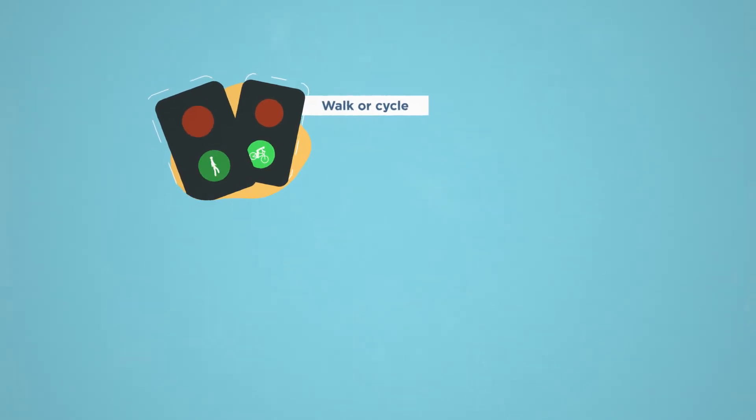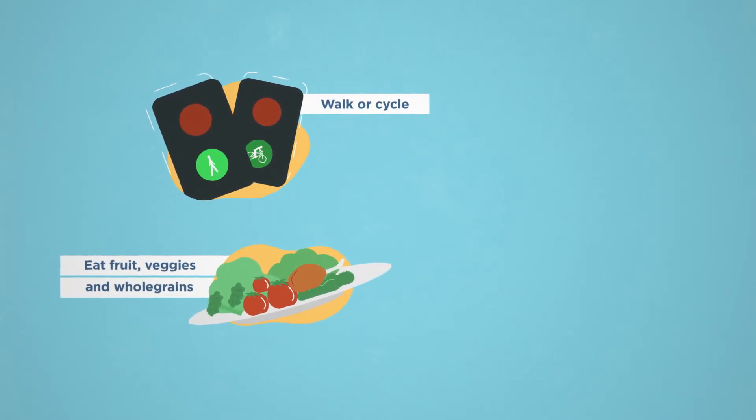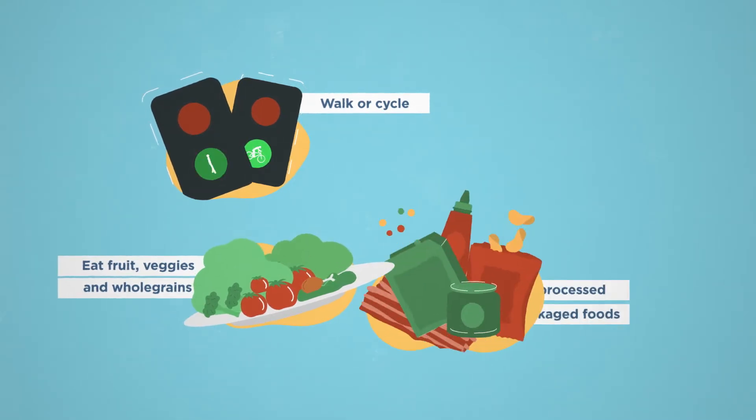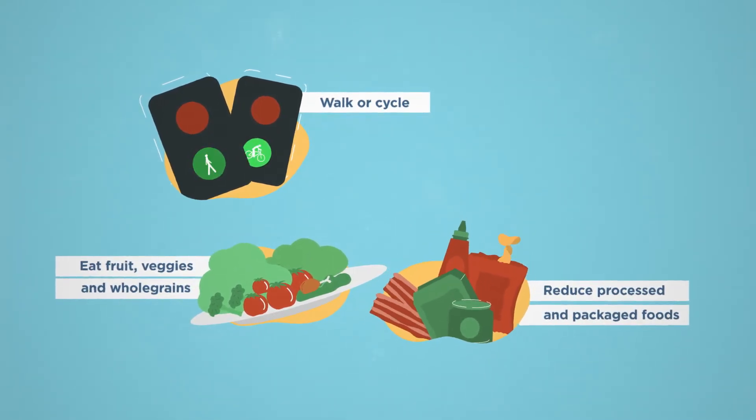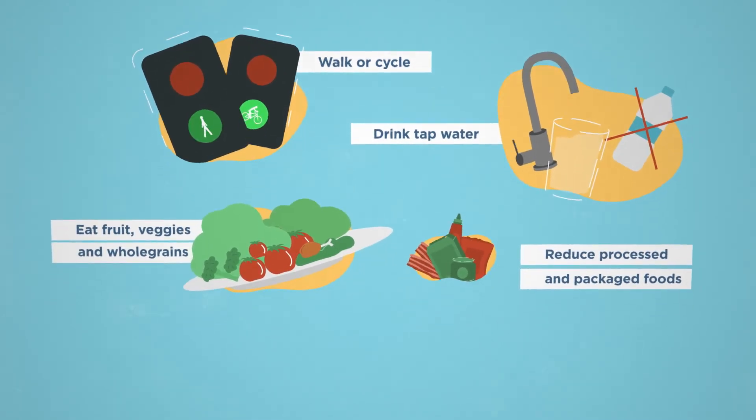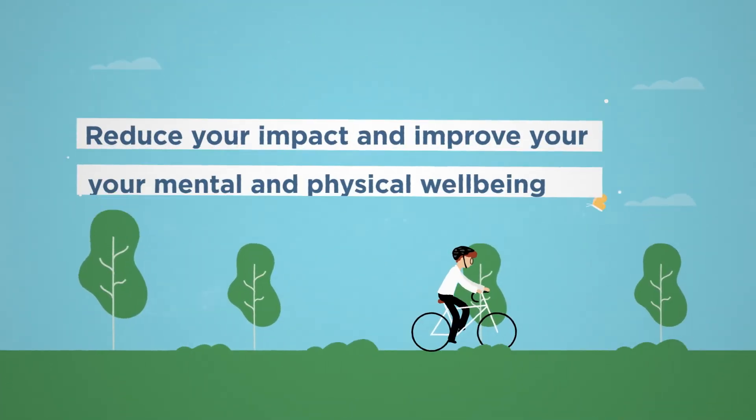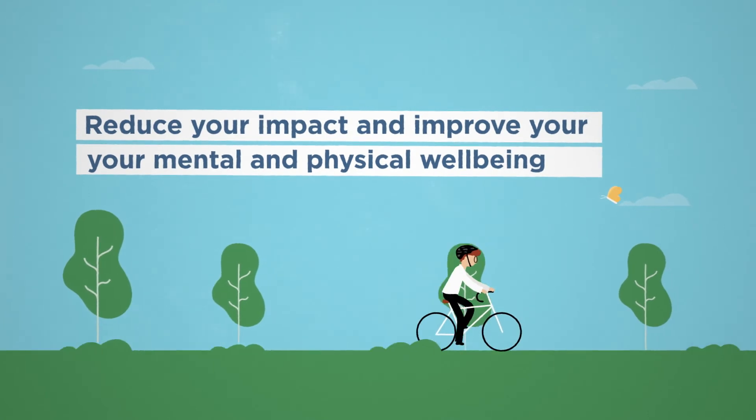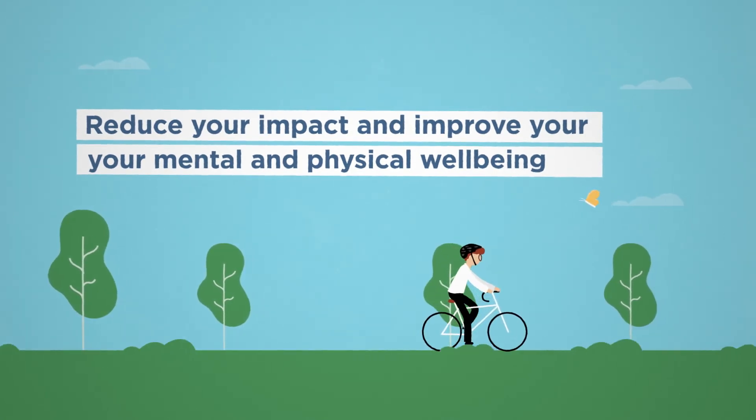For example, things like walking or cycling instead of driving, eating a diet full of fruit, veggies and whole grains, reducing the amount of processed and packaged foods you eat, and choosing tap water over bottled water and sugary drinks, not only help to reduce your impact on the environment, but also improve your mental and physical wellbeing.